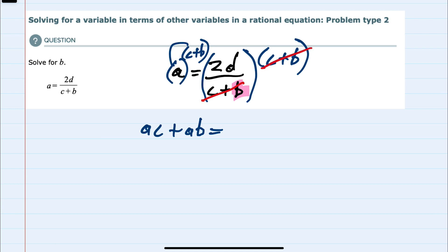And that was why I chose c plus b as a multiplier on the left and right, so that those would cancel, leaving me now with just the 2d in the numerator. And so to continue solving for b, I would first get the ab term by itself by subtracting the other term over to the other side. So the ac's would cancel,